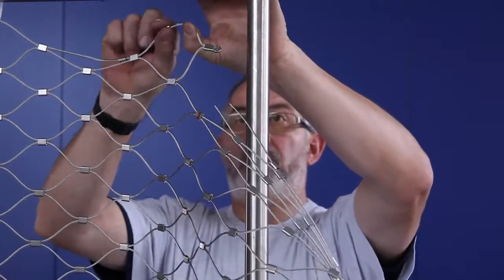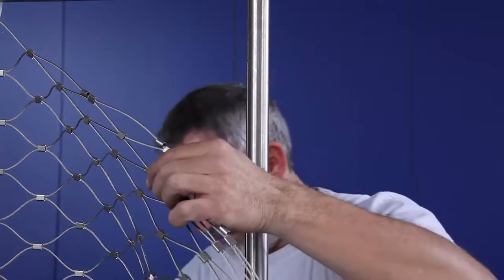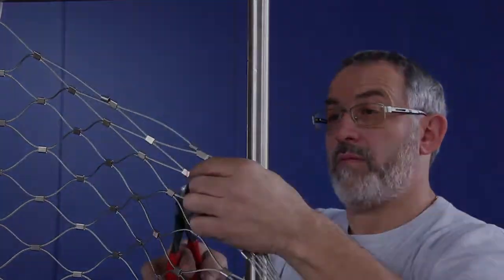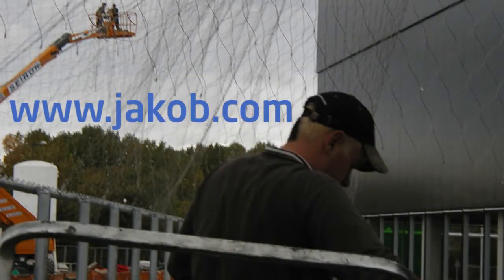Attach the net with the cable ties and proceed in the same way as the basic installation. You can find further information and assembly instructions at jacob.com.